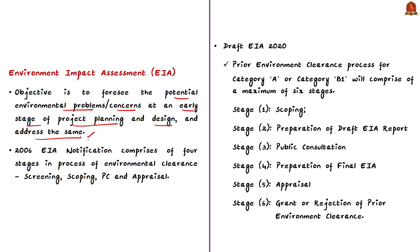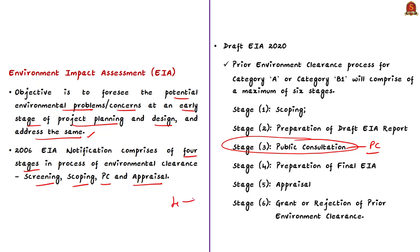One major change in the draft EIA 2020 is with respect to public consultation, which is one of the stages in the process of environmental clearance. As per the EIA 2006 notification, the process comprises four stages: screening, scoping, public consultation, and appraisal. As per the proposed draft EIA 2020, this increases to six stages: scoping, preparation of draft EIA report, public consultation, preparation of final EIA, appraisal, and grant or rejection of prior environment clearance.